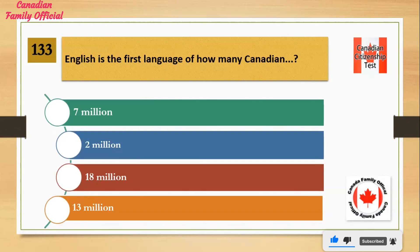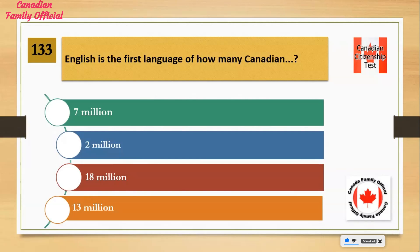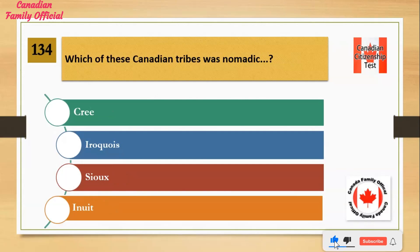English is the first language of how many Canadians? Number 1: 7,000,000. Number 2: 2,000,000. Number 3: 18,000,000. Number 4: 13,000,000. And the answer is 18,000,000.